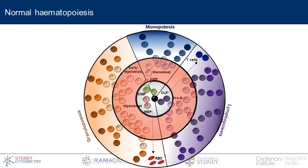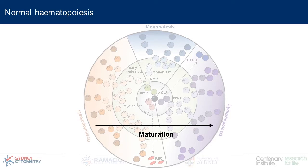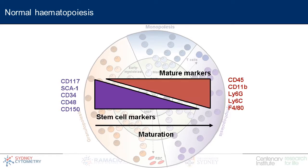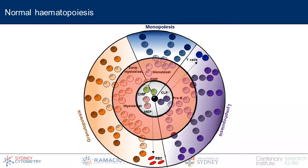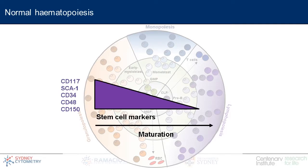Thinking about what differentiation looks like in terms of trackable proteins: stem cells are reasonably well-defined by their surface markers, and mature cells gain familiar maturation markers. However, these highly proliferative intermediate cells exist right in the middle and are much more difficult to analyze because we don't have a full understanding of exactly what phenotypes exist there.